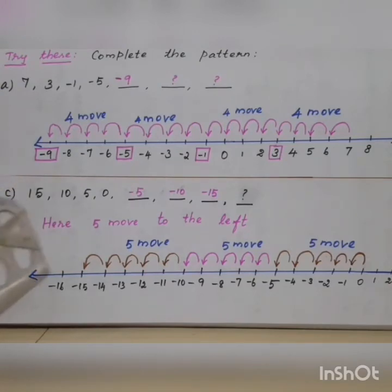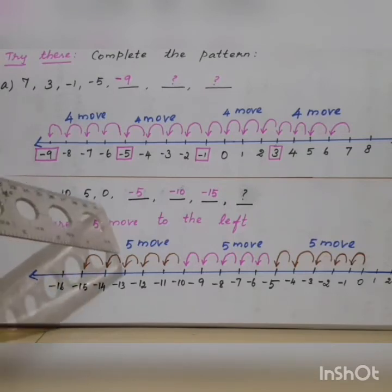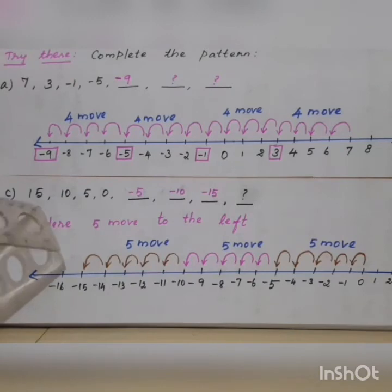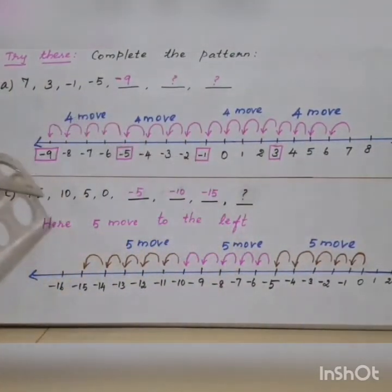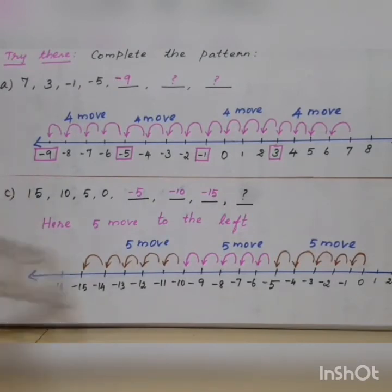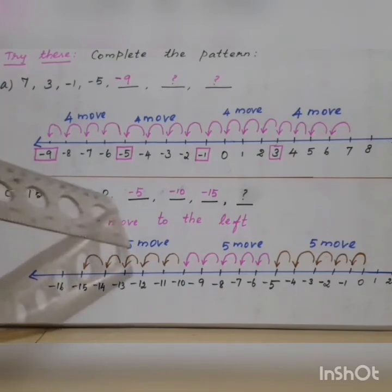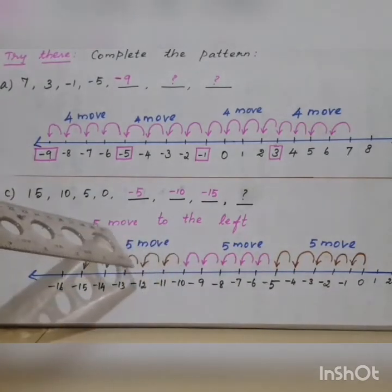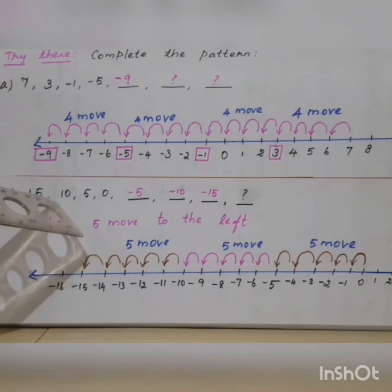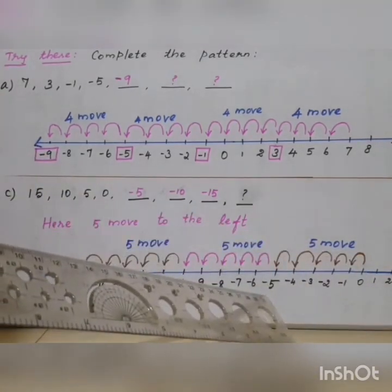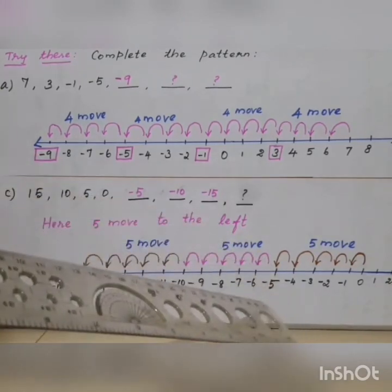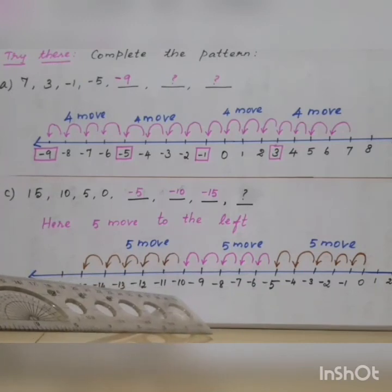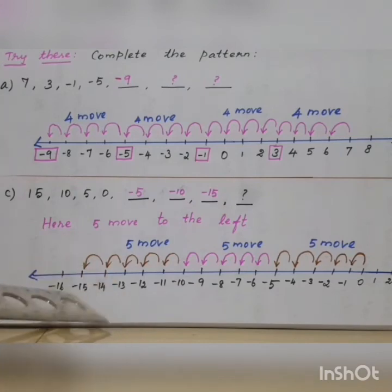The C sum. B and D sums are homework. For C: 15, 10, 5, 0 — what are the next four numbers? Five numbers are decreased. In decreasing order, the number line moves to the left side. The number line is too lengthy so I start with 0. Decreased by 5 numbers, so move 5 to the left: 0 minus 5 moves gives minus 5. Next 5 moves gives minus 10. Next 5 moves gives minus 15.